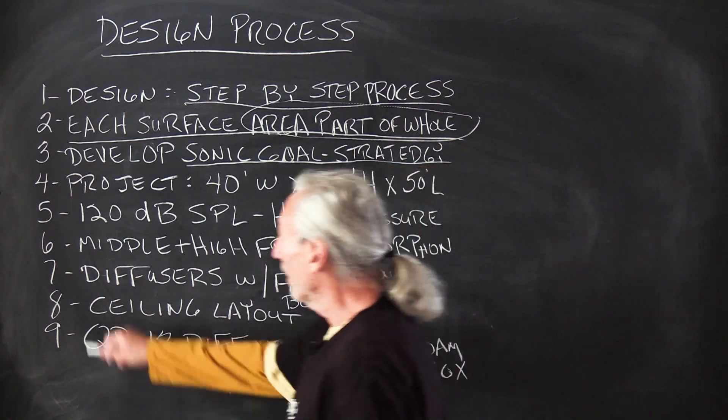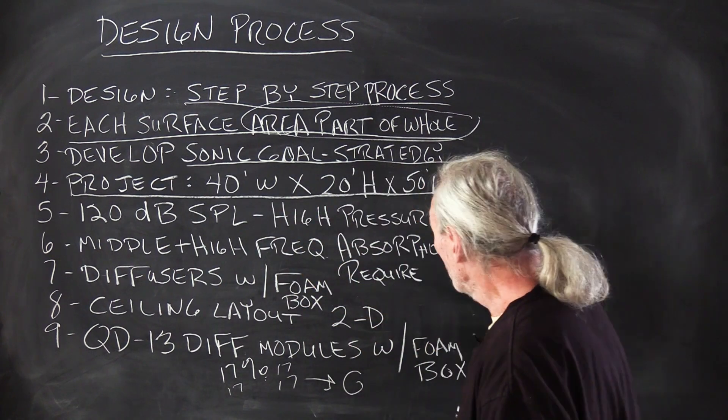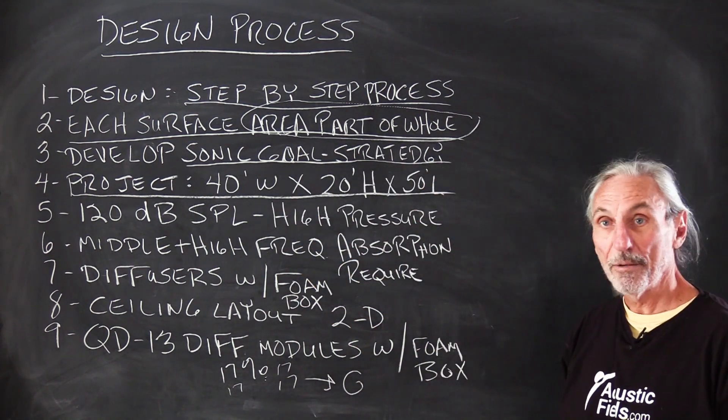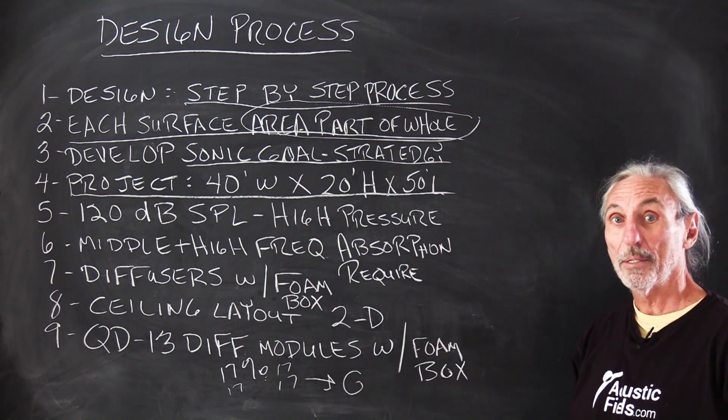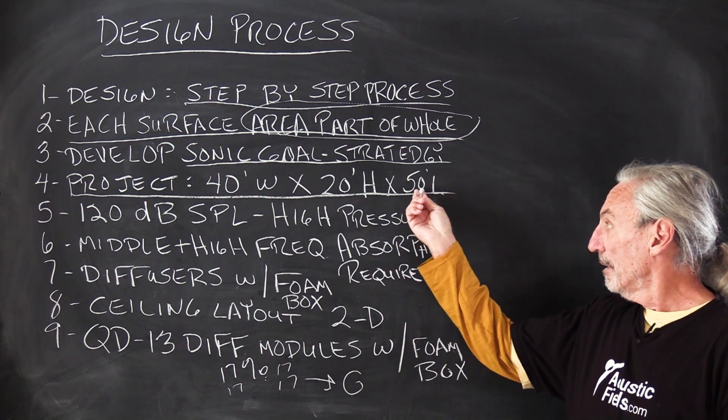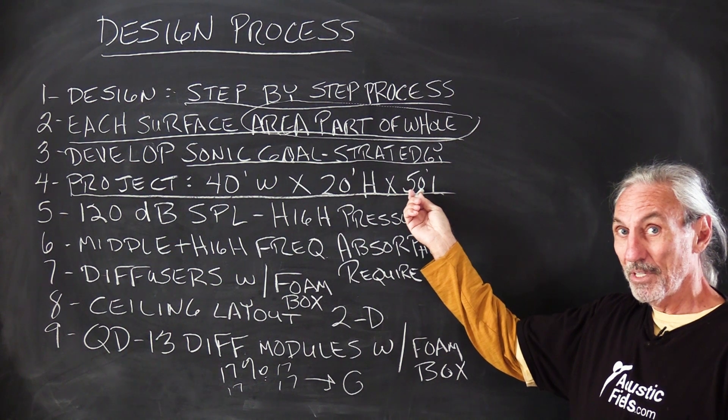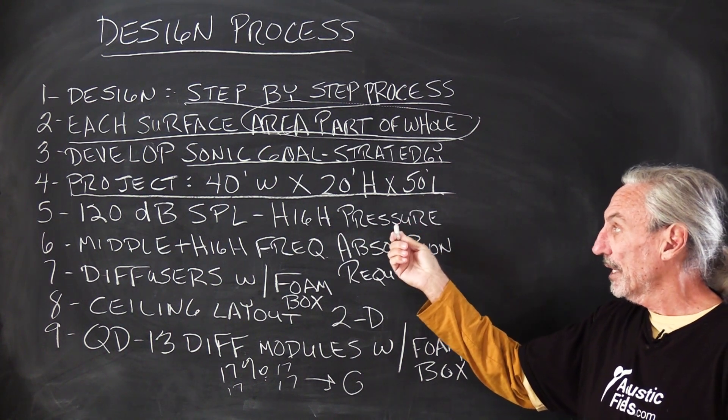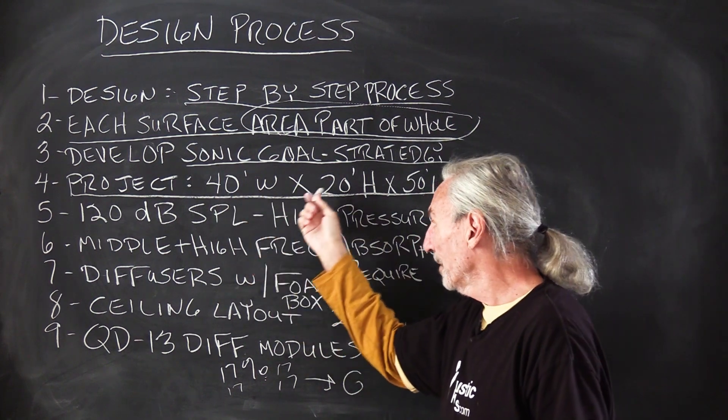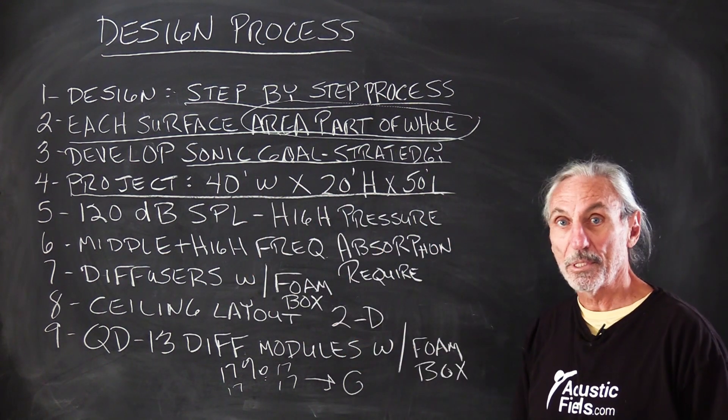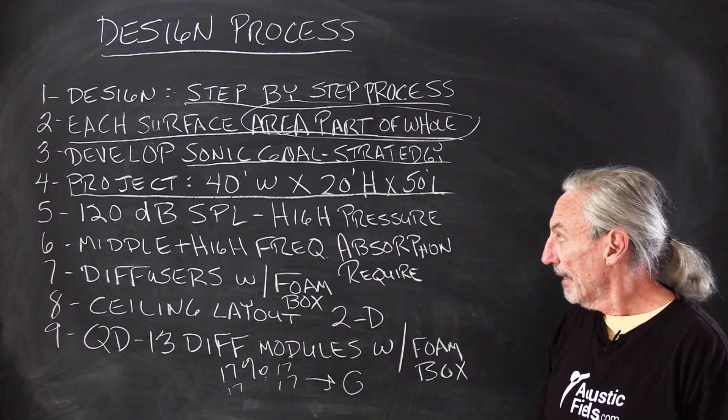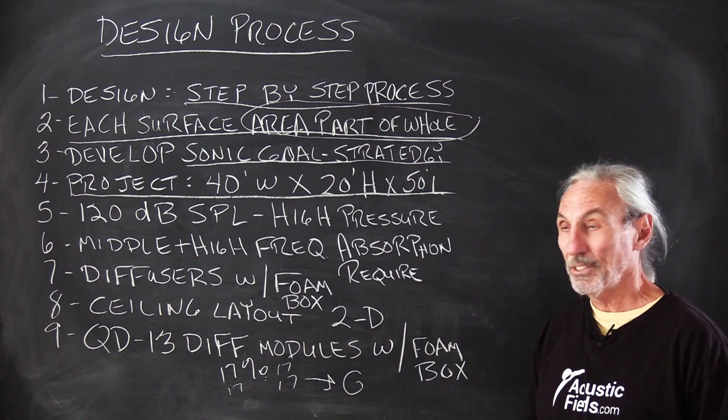Here's a project that we're working on overseas in Asia: 40 foot wide, 20 foot high, 50 foot long. Big, nice sized room - 50 feet. We all know 30 cycles is 38 feet, so we've got plenty of room for 30 cycles. Pretty good room for 30 cycles here. We're going to have a little problem with 30 cycle energy there, but all manageable - that's the key.